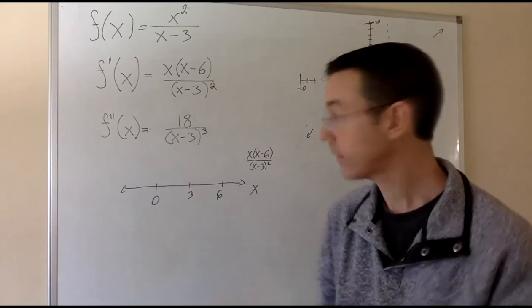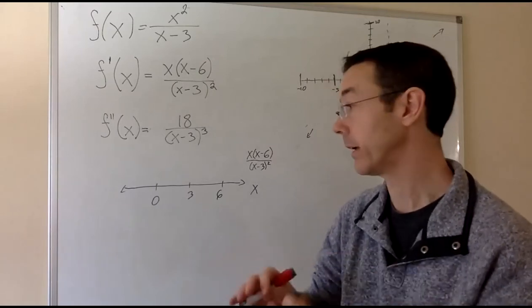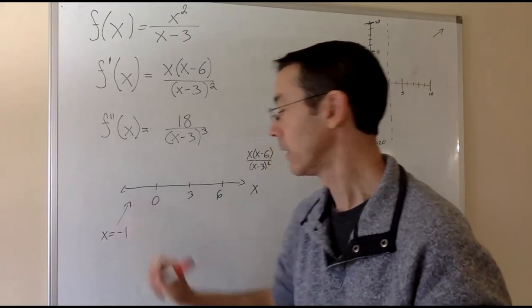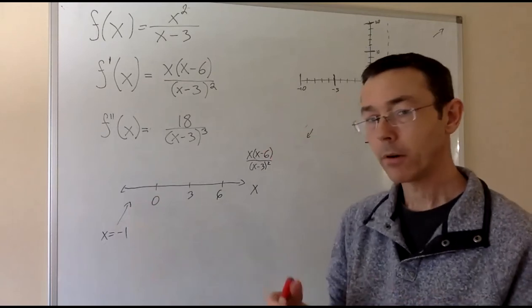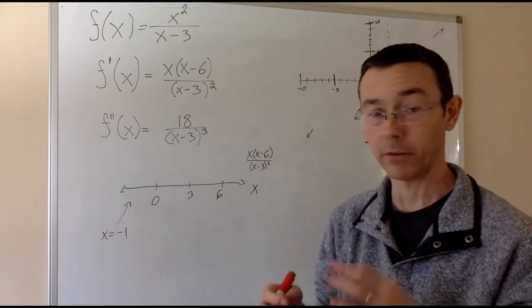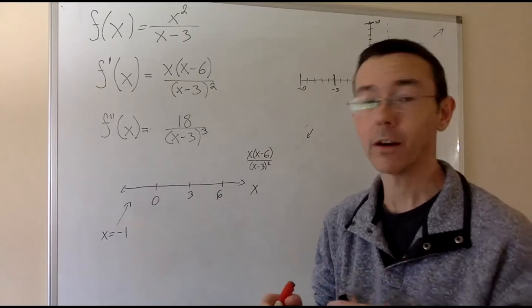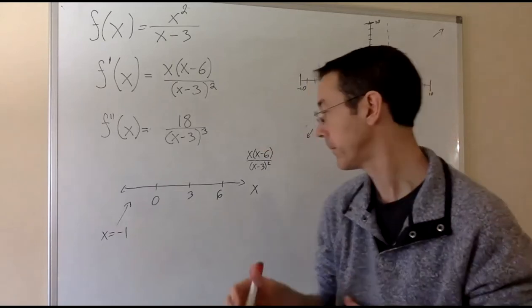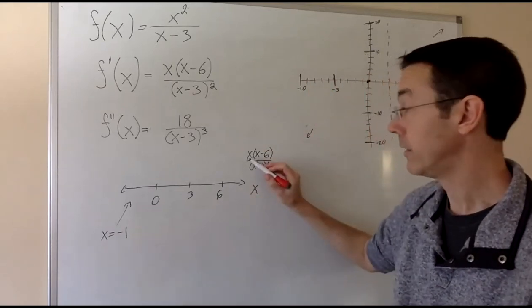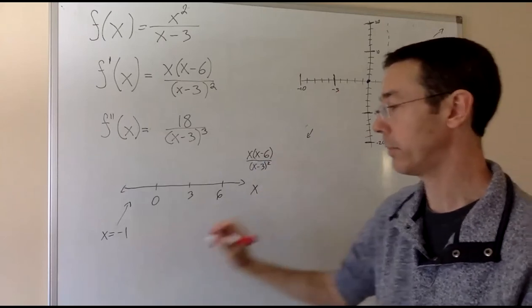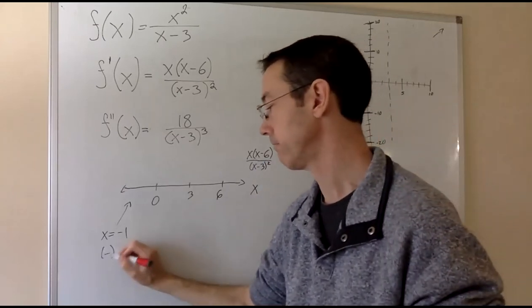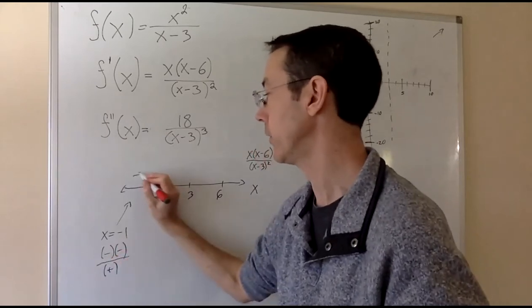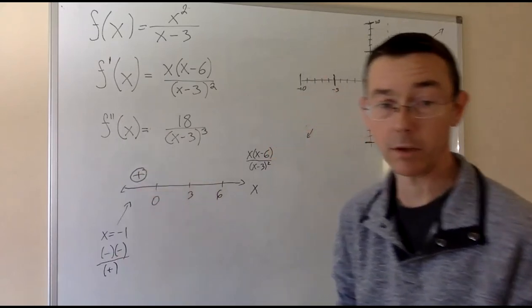Let's pick a point in each interval, plug it in, and see whether we get a positive or negative. Starting over here, let's look at x equals minus 1. Remember, we don't actually care what the value of f prime is at any of these values. We just care if it's positive or negative. So I'm really just going to be thinking in terms of pluses and minuses. When x is negative 1, I have a negative times a negative over a positive. So that's a positive. So the function is going to be increasing there.